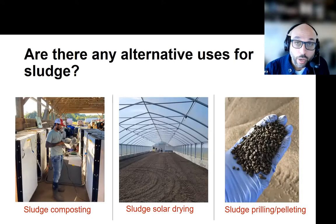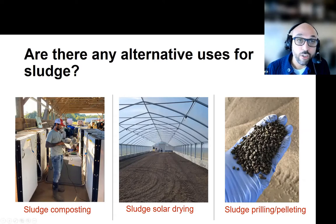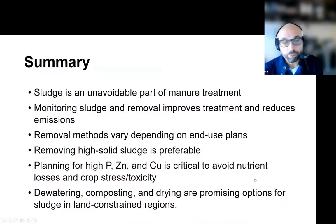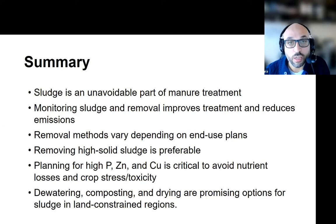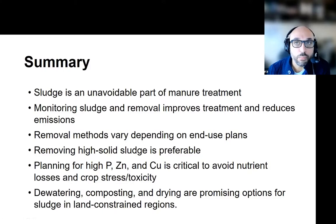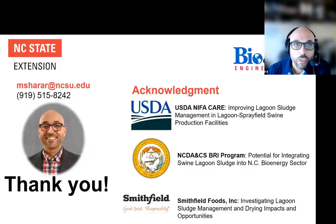That's really one of the drivers for us in the Southeast to look into alternative technologies to use that sludge beyond just land applying it, especially since we have limited acreage. For those attending Waste Worth, we'll be presenting research on integrating sludge into composting recipes and using solar greenhouse structures to dry it and take it to a granular form that could be distributed or marketed. To sum up: sludge is an unavoidable part of manure treatment; monitoring and removal is critical to ensure digester and lagoon performance; the method of removal depends on the type of structure; and it's important to plan for zinc, copper, and phosphorus to avoid stress for crops and soil. Dewatering, composting, and drying are all technologies in our arsenal. Thank you all, and don't hesitate to reach out with any questions.